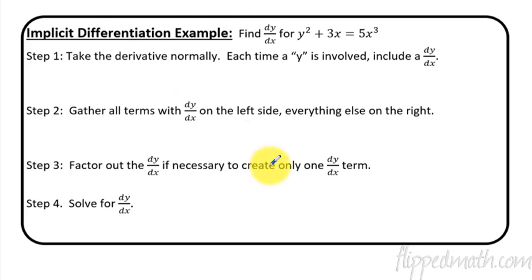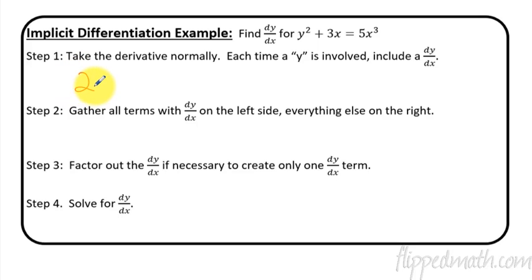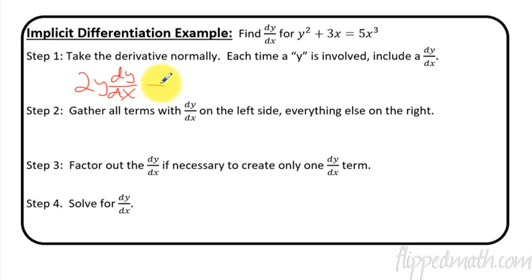Here's an example with some step-by-step guidance of how this is done. y squared plus 3x equals 5x cubed. Yes, we could get y by itself, but let's not do that — we're going to do implicit. So take the derivative normally. This y squared: if you take the derivative you get 2y. Each time a y is involved, we're also going to tag on a dy/dx. Plus, the derivative of 3x is 3, equals the derivative of 5x cubed is 15x squared.